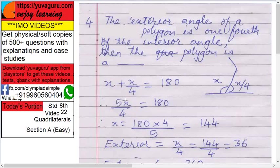Four plus one five. Five x upon four equals to 180. Therefore x equals to solve this you get 144. Now we got the internal angle 144.